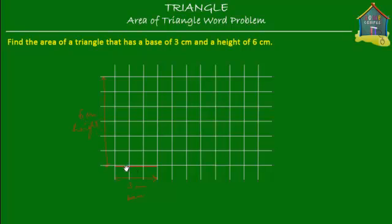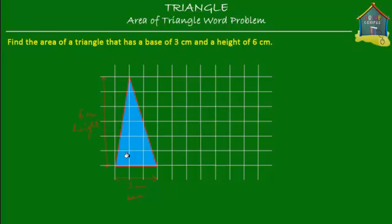So I've drawn one of the sides of the triangle. Let me draw the other two sides — the other two sides would go until here, and we close the triangle. Let's also fill some color into it. Here is my triangle with a base of three centimeters and a height of six centimeters.